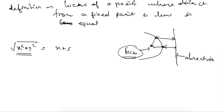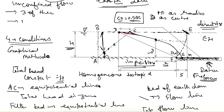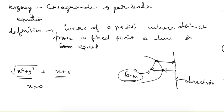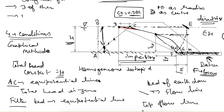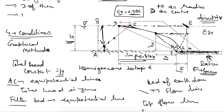From the parabola property: √(x² + y²) = x + s. Here, x + s is the distance from the line (directrix) and √(x² + y²) is the distance from the focus. When x = 0 (at the focus), y = s. This gives us one condition to locate the parabola.